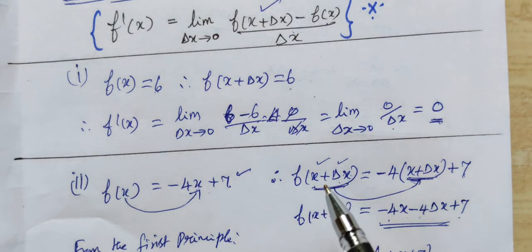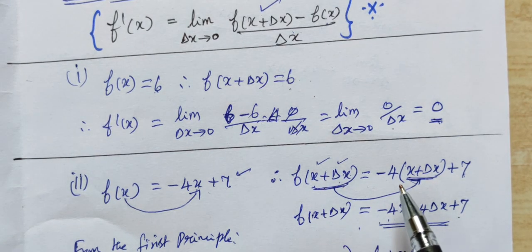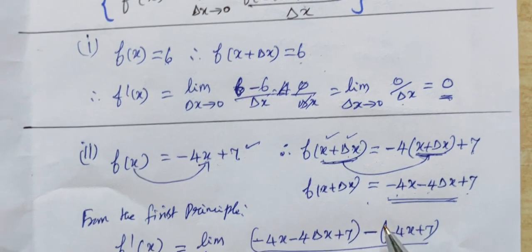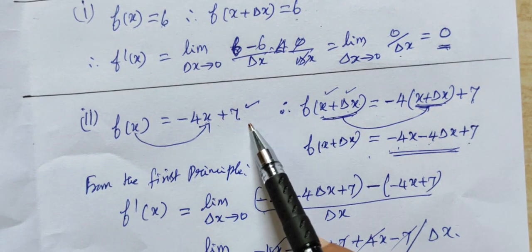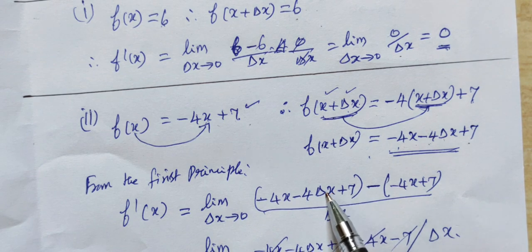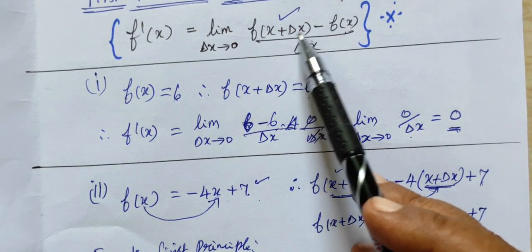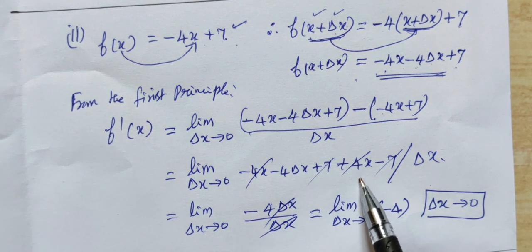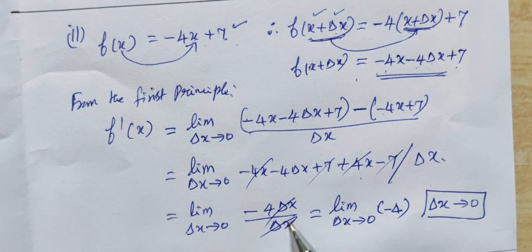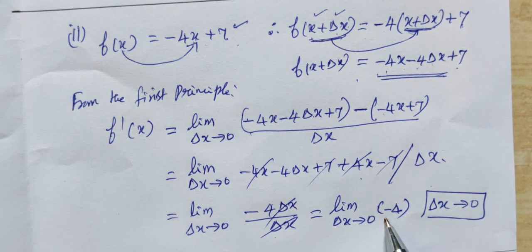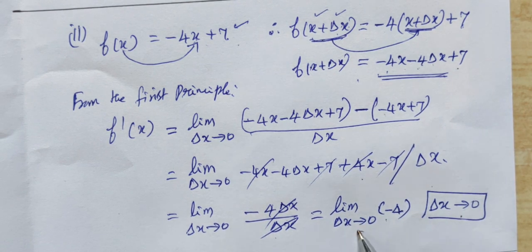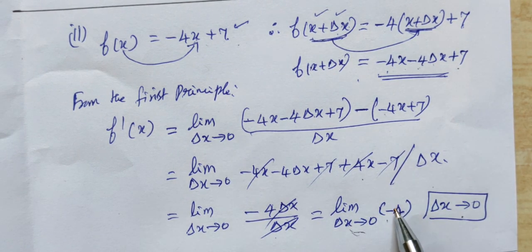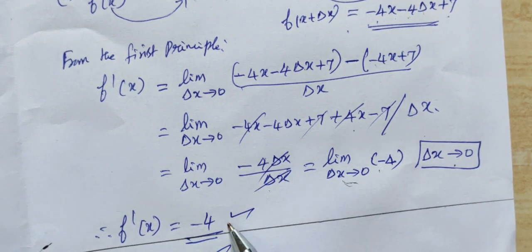Then it will be -4 times (x + delta x) plus 7. So, -4 into x, then -4 delta x, then plus 7. After expanding and substituting, the remaining answer is minus 4.